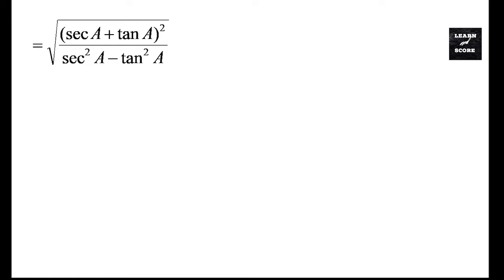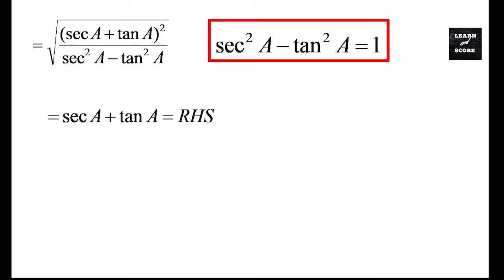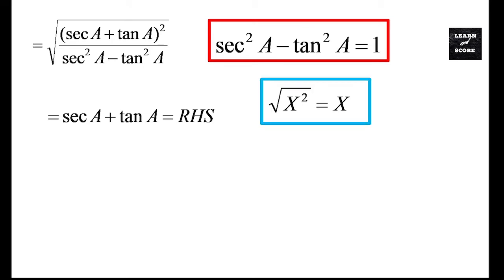We have already learned the identity sec²A - tan²A = 1, which I explained in my previous video. So instead of that denominator we can rewrite it as √((secA + tanA)² / 1). Since √(X²) = X, we know that when X appears twice under the radical it becomes X only. So the answer is secA + tanA.